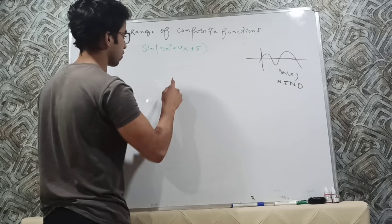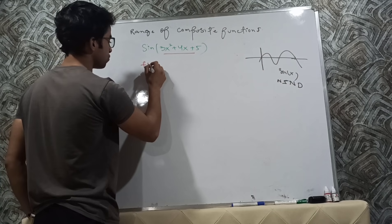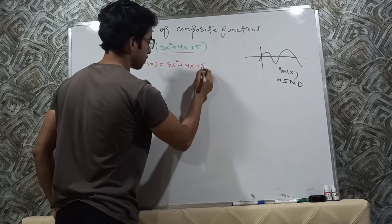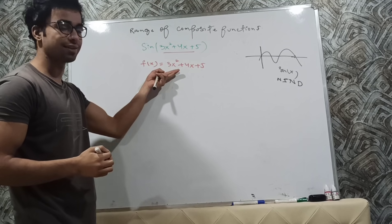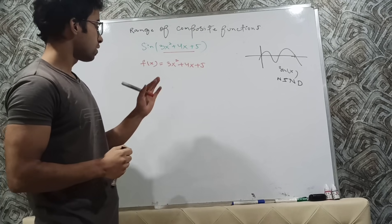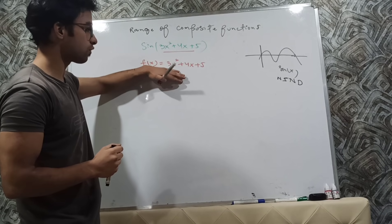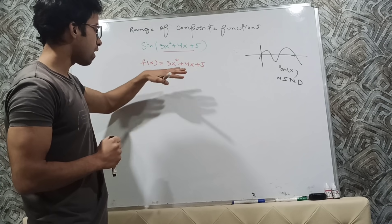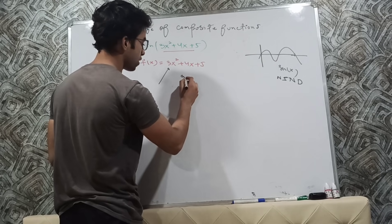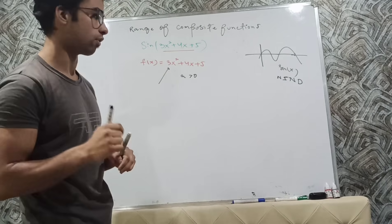The first step is to find the range of the inner function. Let me assume that the inner function is f(x) = 3x² + 4x + 5. This function is a parabola — I know that because it has an x² term, an x term, and a constant. To find the range, I need to find the minimum and maximum value. The coefficient in front of x² is positive, so a > 0, meaning the parabola opens upward.